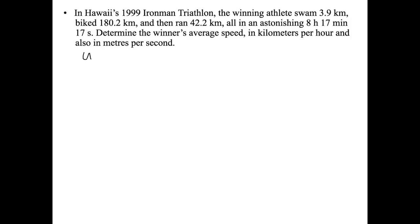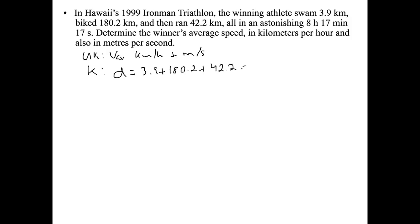Our unknown is average velocity in kilometers per hour and meters per second. What do we know? We know the total distance equals 3.9 plus 180.2 plus 42.2, which equals 226.3 kilometers. We also need to find the time in hours, since that's what the first part of the question asks for.